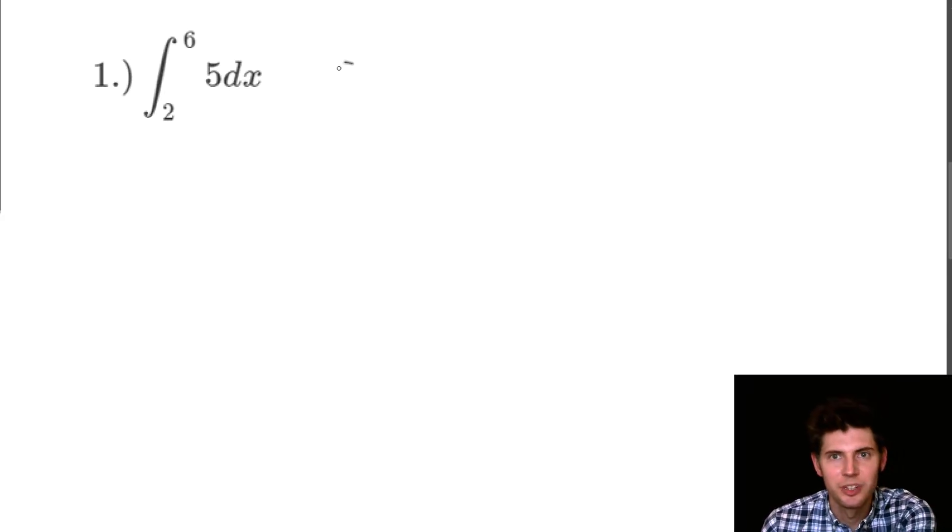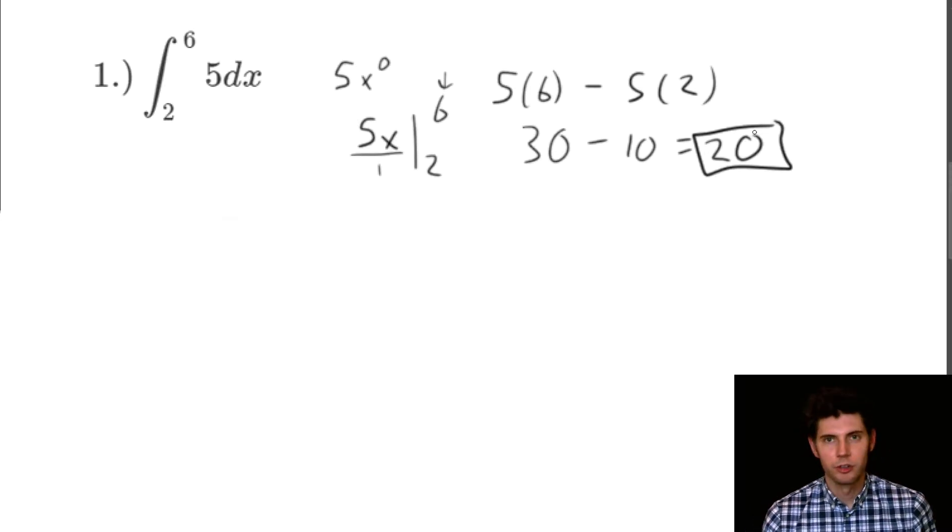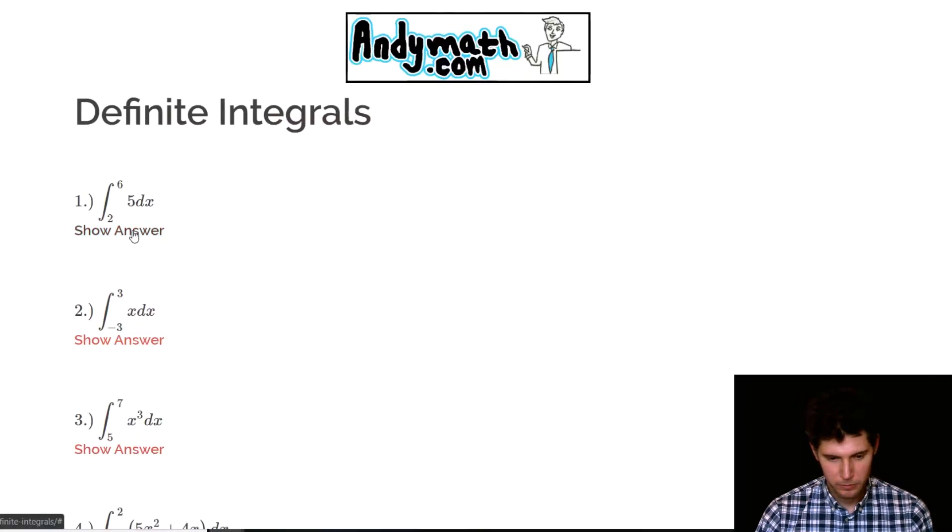Number one is the integral from two to six of five dx. So when we take five, that's basically x to the zero. So we're going to add one to that zero, which is going to give us five x, and then we divide by one. And we're going to evaluate from two to six. So it's going to be five times six minus five times two. Five times six is 30, five times two is 10. And so our final answer is 20.